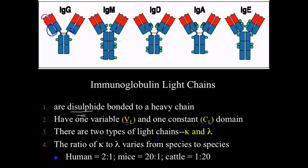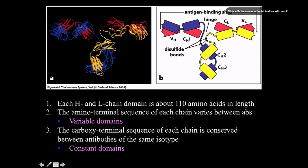There's a lot of variation among mammals in kappa-to-lambda ratios: in humans it's 2-to-1, in mice it's 20-to-1, and in cattle it's 1-to-20. A three-dimensional diagram shows just how much flexibility there is at the hinge region — you can imagine grabbing it and rearranging it in many directions.